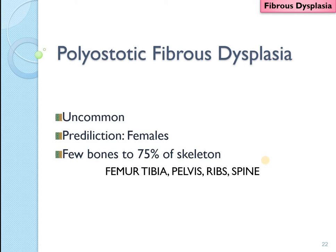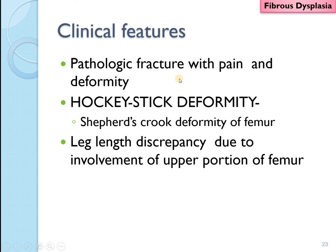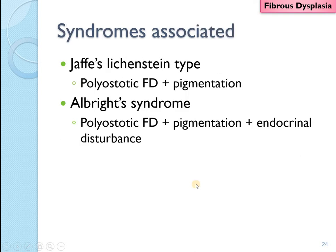Similar to monoostotic fibrous dysplasia, multiple bones may be involved in polyostotic fibrous dysplasia, indicating that the mutation occurred much earlier in the multicellular stage. Although uncommon, it occurs more likely in females. Up to 75% of the skeleton may be involved, with spine also commonly affected. Pathologic fracture with pain is more common, and due to repeated fracture and bending of the bone, there may be a shepherd's crook deformity of the femur. Leg length discrepancy may result, causing the patient to walk with a limp.